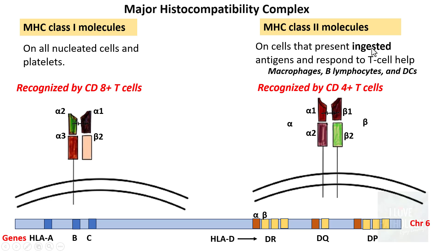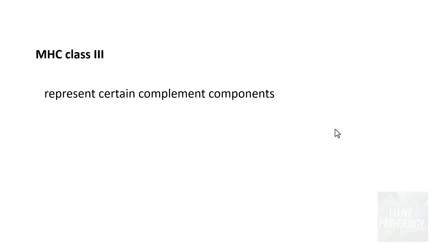To summarize the differences: class 1 molecules are recognized by CD8-positive cytotoxic T cells, whereas class 2 molecules are recognized by CD4-positive helper T cells. Class 1 has a single heavy chain plus a small light chain, while class 2 has alpha and beta chains both spanning the cell membrane. Class 1 presents endogenous antigens and class 2 presents exogenous antigens that have been phagocytosed. There is also MHC class 3, which represents certain complement components but is not a histocompatibility antigen per se.